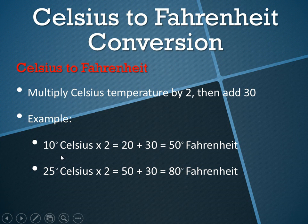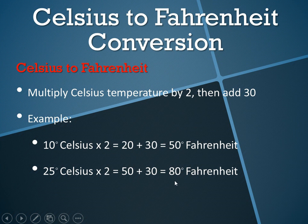As an example, 10 degrees Celsius times 2 is 20, plus 30 is 50 degrees Fahrenheit. And 25 degrees Celsius times 2 equals 50, plus 30 equals 80 degrees Fahrenheit.